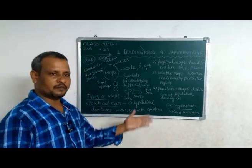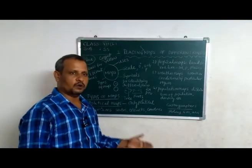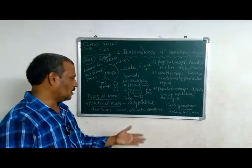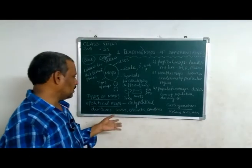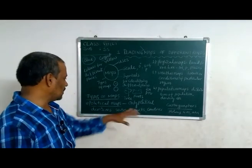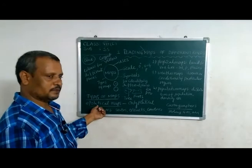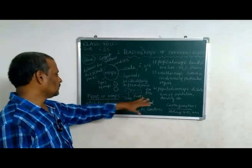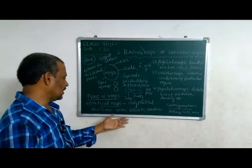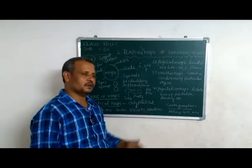Countries and their capitals — for example: Pakistan and Islamabad, Sri Lanka and Colombo, America and Washington DC. Political maps show only political divisions like states, districts, and headquarters.